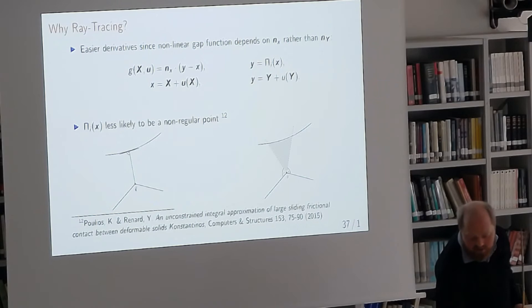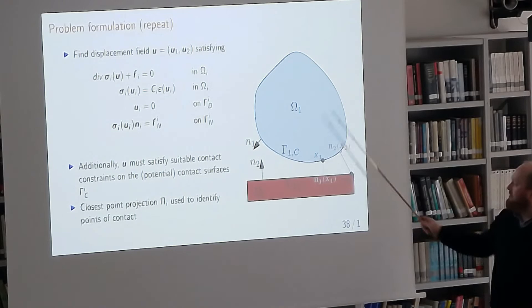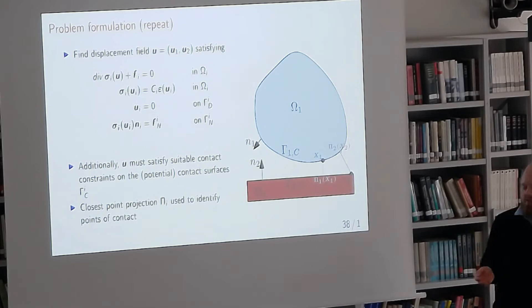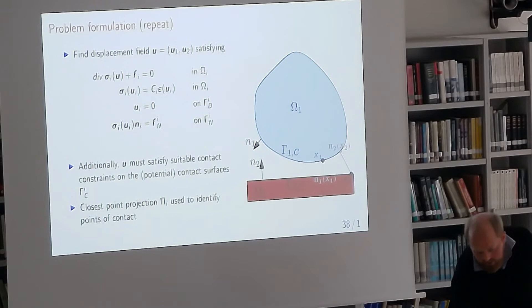Ray tracing is also less likely to hit non-regular points. If you have a kink — a non-differentiable point in the geometry — a ray can only hit it precisely at that exact point. With a closest point projection from the other side, a whole area maps to that singular point, causing issues in Newton iteration because you don't know which facet you're constrained to and you have a non-differentiable normal. To summarize: we have a two-body problem with multiple ways of computing the gap between them, some more challenging than others, and we want to use nonlinear equality constraints solved with a Newton method.